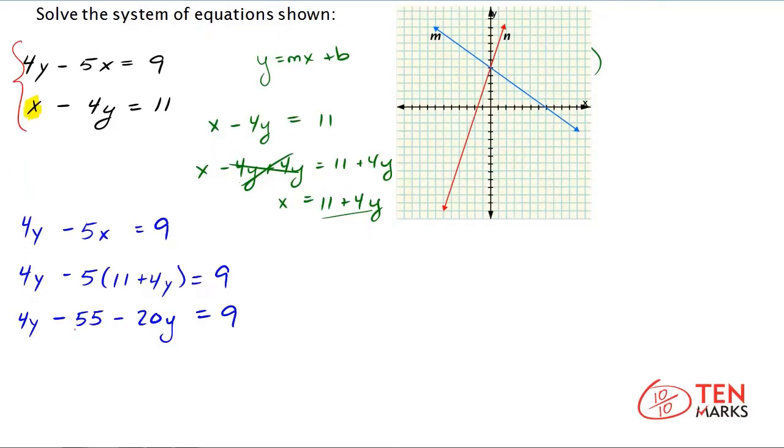So combine like terms by adding 55 to both sides. And the 55 on the left side will cancel out to 0. And you're going to get 4y minus 20y on the left equals 9 plus 55 on the right.